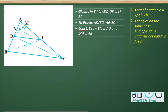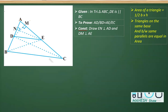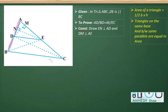In this question, we have some given information. The given thing we'll be writing is that in triangle ABC, DE is parallel to BC. And then in the proof, we have to prove that AD over BD is equal to AE over EC.